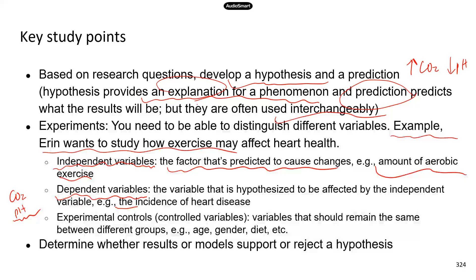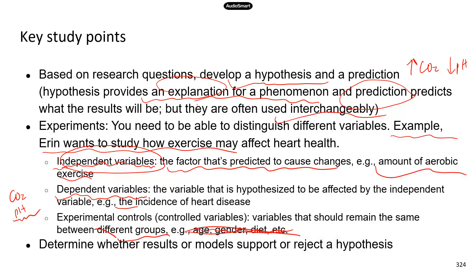Experimental controls are also known as controlled variables — these are the variables you should maintain the same between different treatment groups, between a control group and different experimental groups. These are factors that could confound the experimental results, so you want to keep them exactly the same among all groups. That way, when groups have different outcomes, you know the outcomes are a result of your independent variable and not confounding factors such as age, gender, diet, or lifestyle.